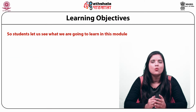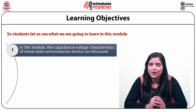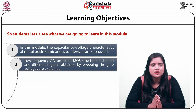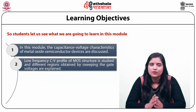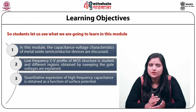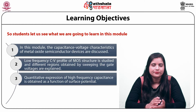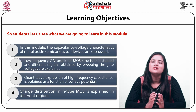In this module, the capacitance voltage characteristics of metal oxide semiconductor devices are discussed. Also, the low frequency capacitance voltage profile of MOS structure is studied and different regions obtained by sweeping the gate voltages are explained. The quantitative expression of high frequency capacitance is obtained as a function of surface potential, and charge distribution in n-type MOS is explained in different regions.